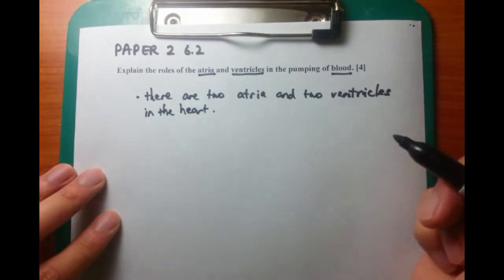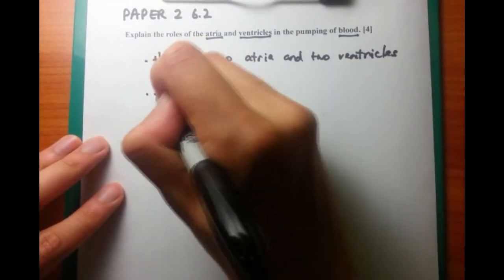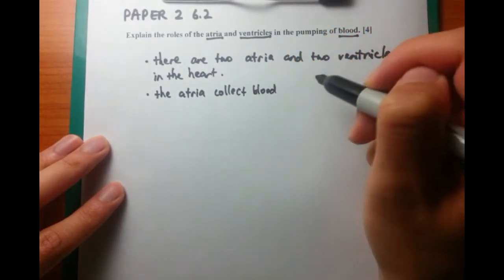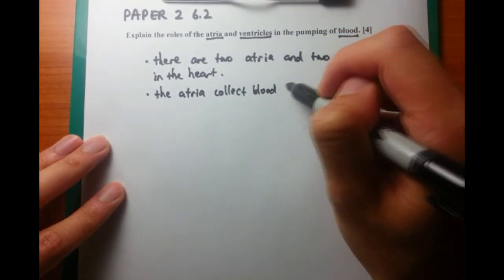Now let's talk about the atria themselves first. Where does the blood come from to the atria? Now for the right atria, it comes from the vena cava. And for the left atria, it actually comes from the pulmonary vein.